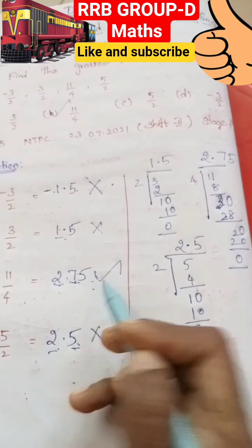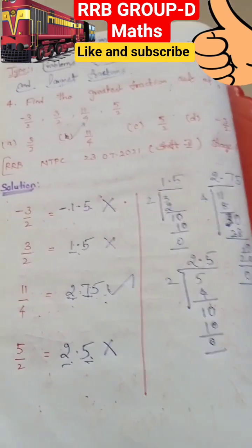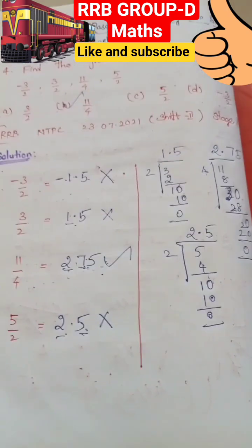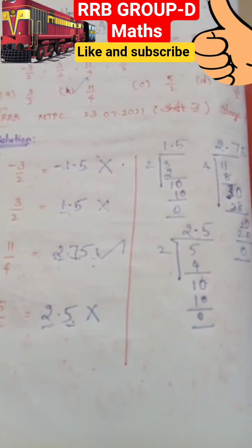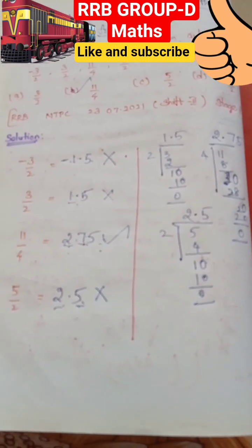So the answer is 2.75, that is 11 by 4 is the answer. Thank you.